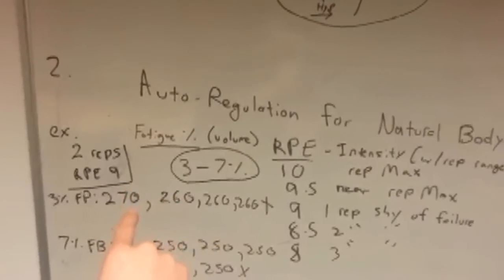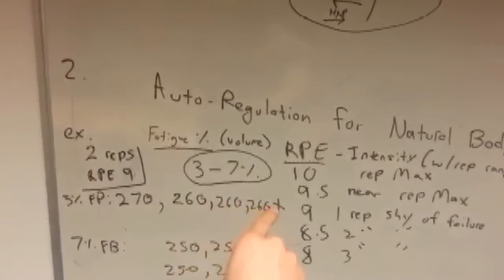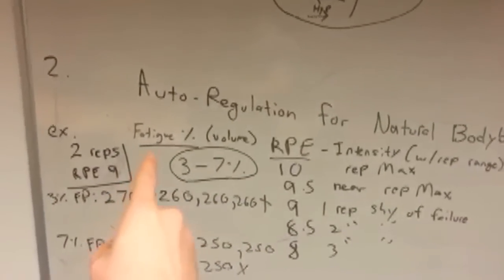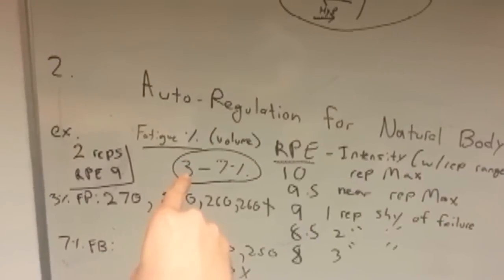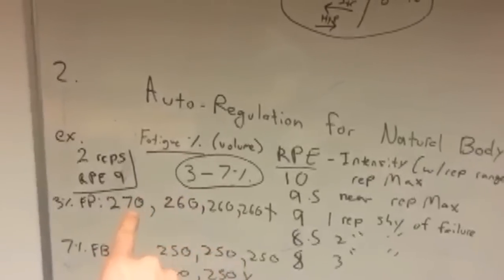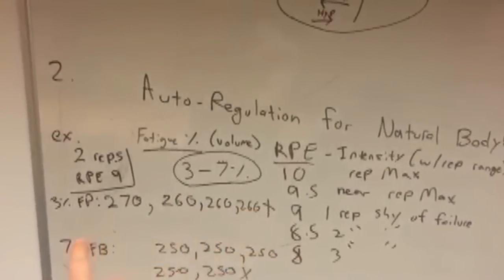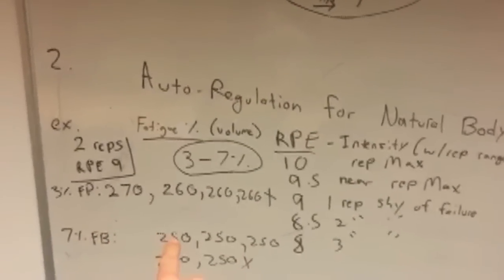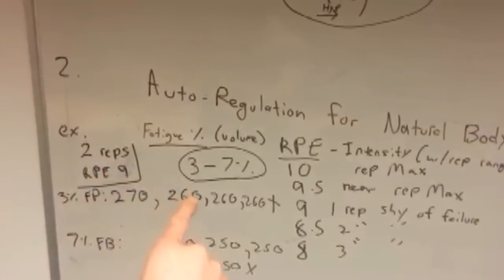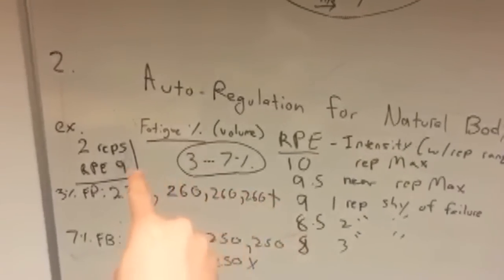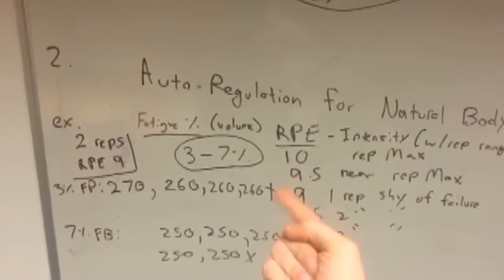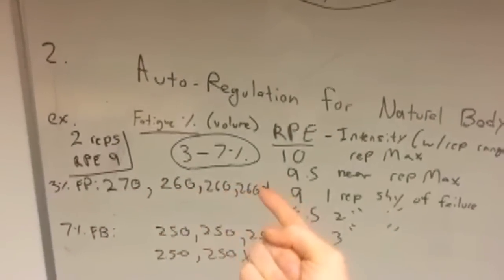Here's an example of a three percent fatigue percentage reduction: 270 drops to about 260 (exactly 262 at three percent). Because the load is so similar to the top set, you might only be able to do one, two, three sets before hitting that stop. You stop with the fatigue percentage once you get back to the original RPE. So this means a higher intensity, lower volume session — our body has told us it can only do four sets at this intensity today.